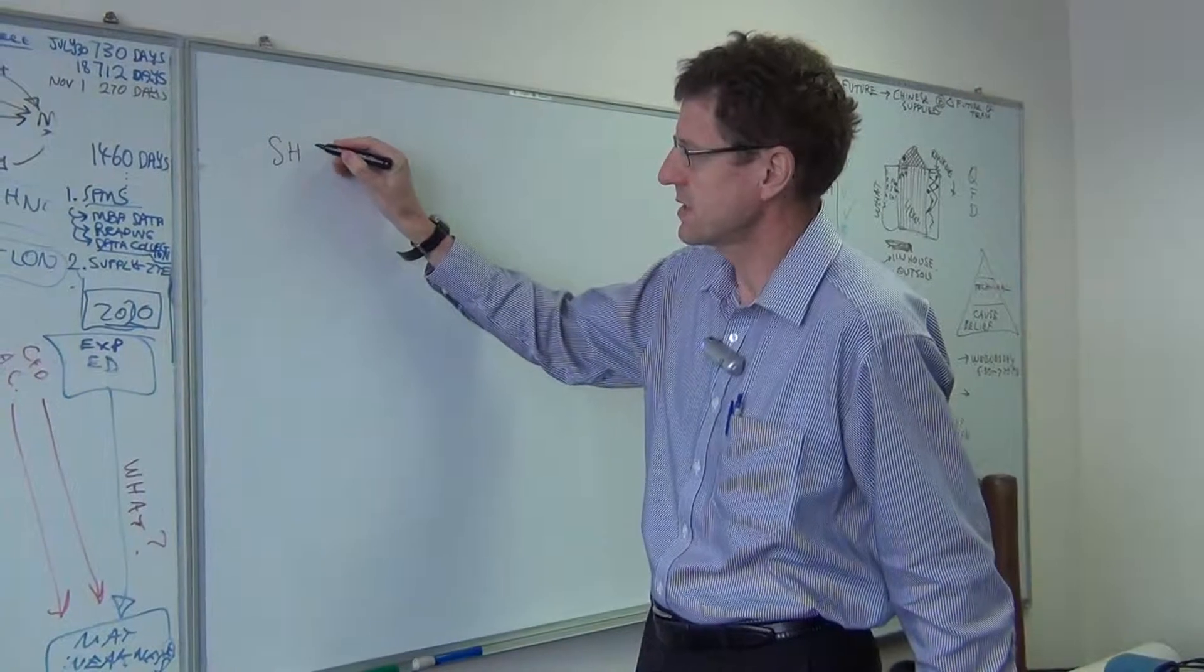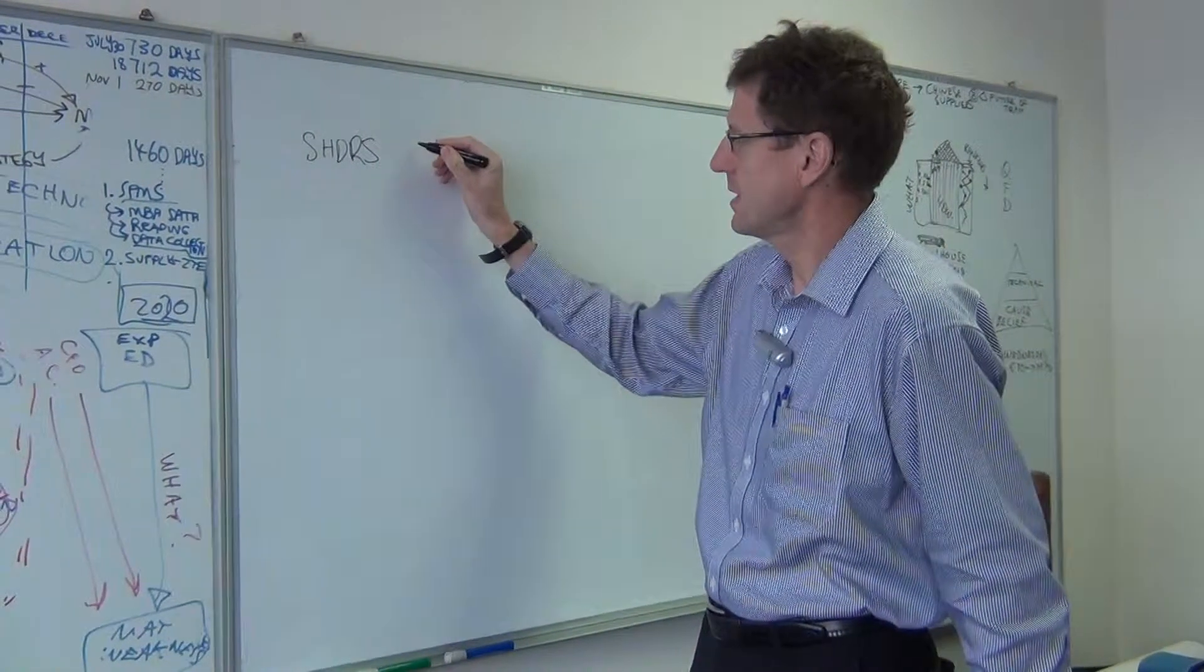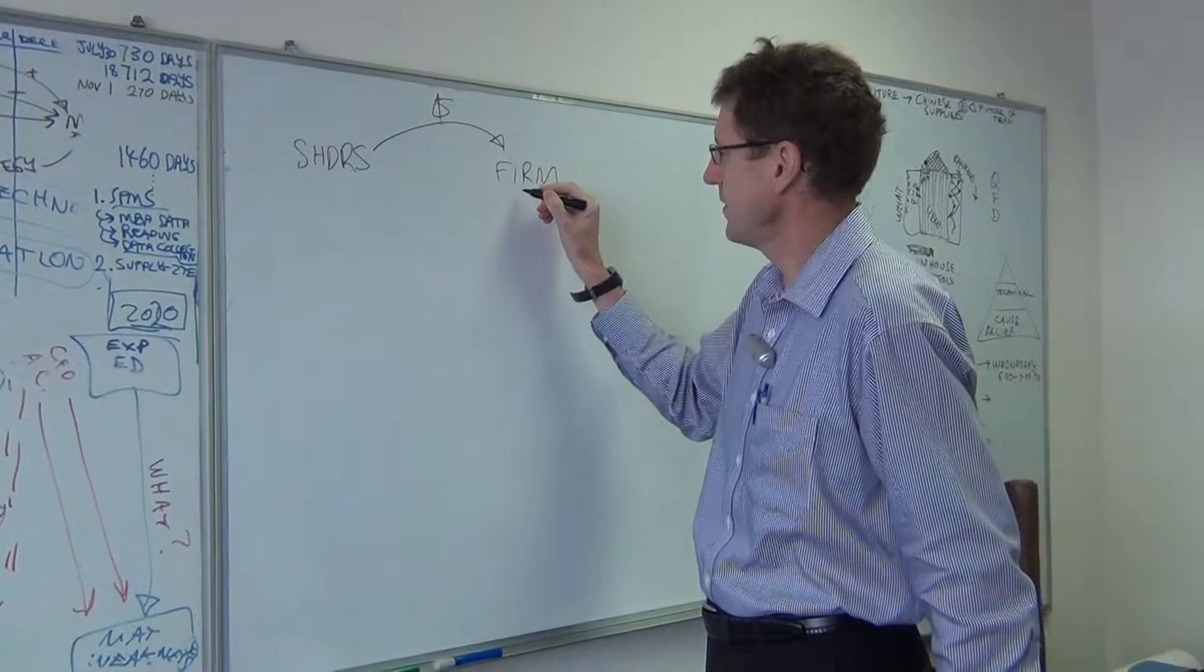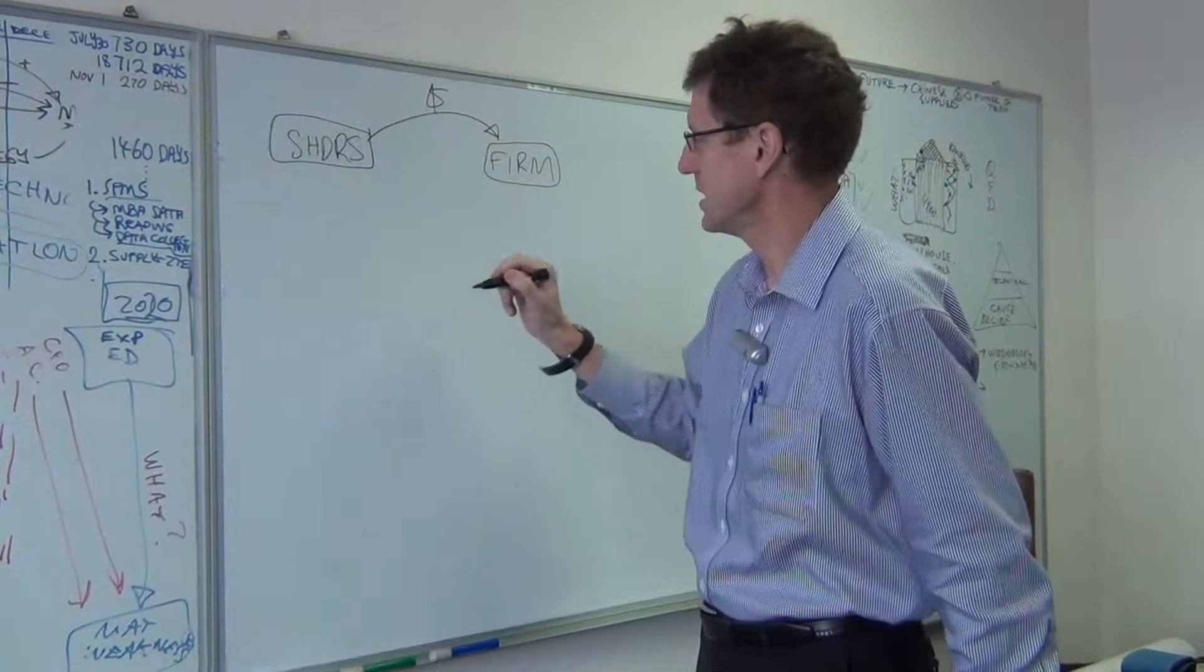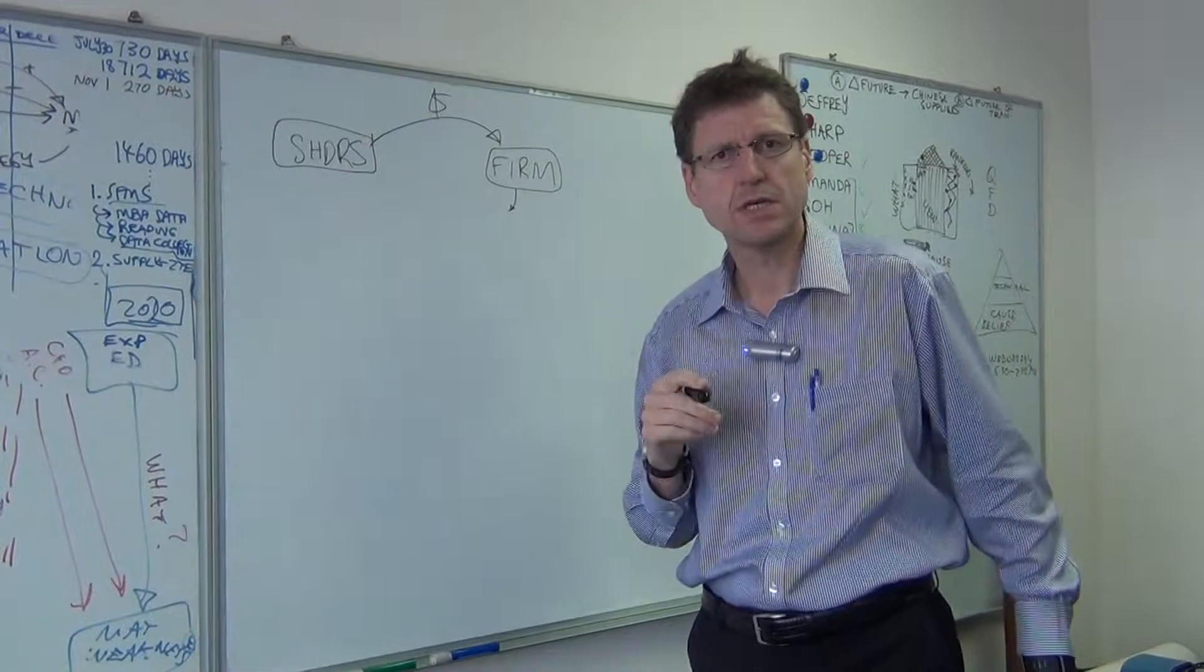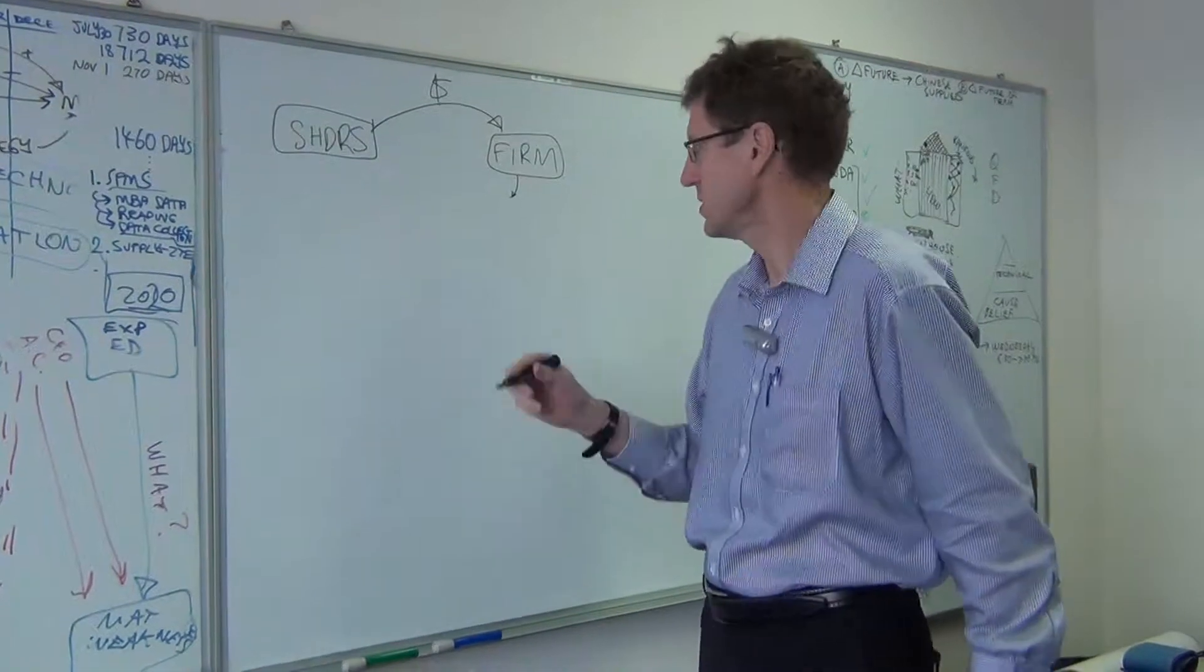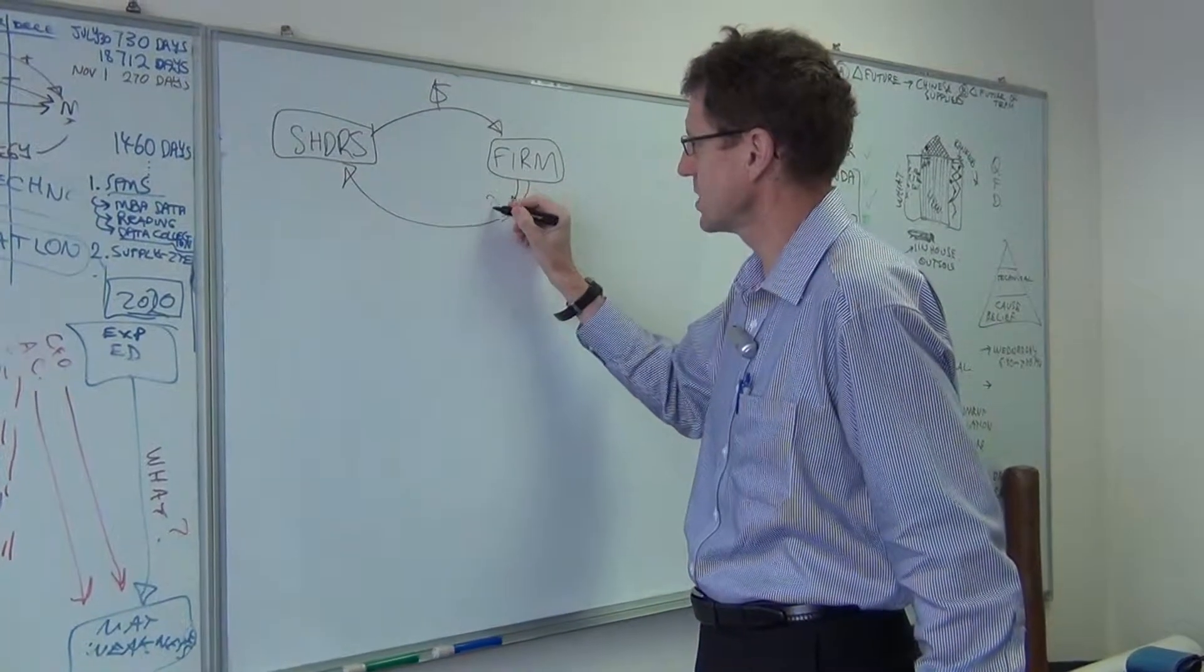For a publicly listed firm, we have shareholders and they would invest money, dollars, into a firm. And the firm, in some ways, is going to convert that investment into returns and the firm will actually earn profits, retain profits over time. That is money that is retained inside the firm and not passed back to shareholders in the form of dividends. And then over time, they're going to accumulate cash.